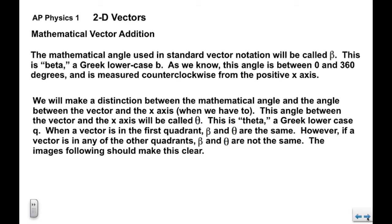When the vector is in the first quadrant, beta and theta are the same. However, if the vector is in the other quadrants 2, 3 or 4, beta and theta are not the same. The following images should make this clear.